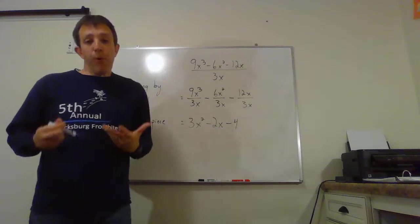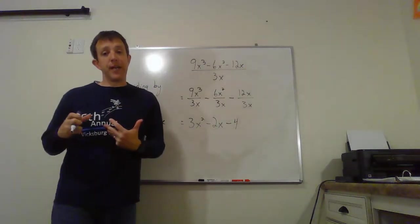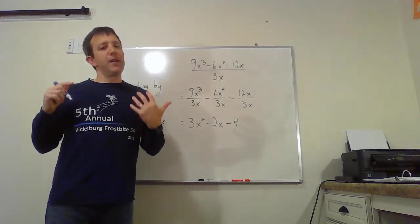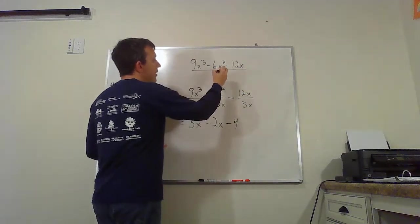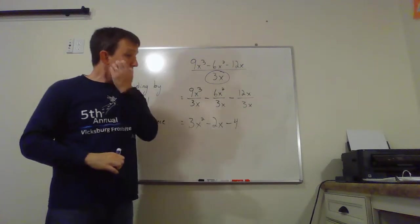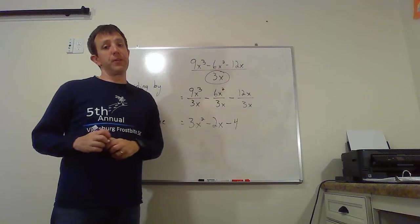Now I do want to pause here for just a second and really stress something. This section, dividing by a monomial, is really nice, really easy, can be done by almost anybody without any trouble. I like your chances. But what makes it easy is that the denominator, the thing we're dividing by, is just a monomial.